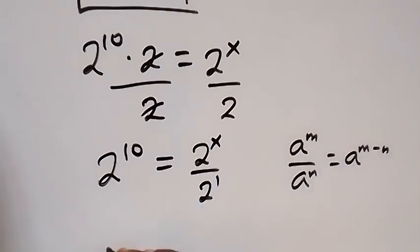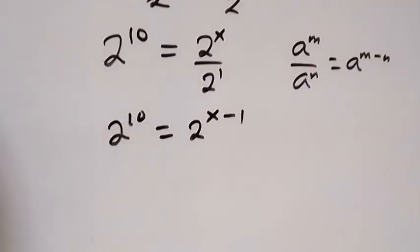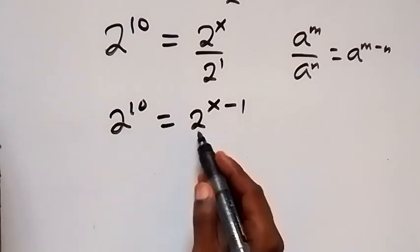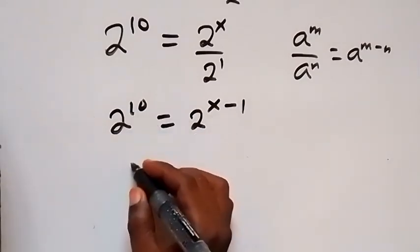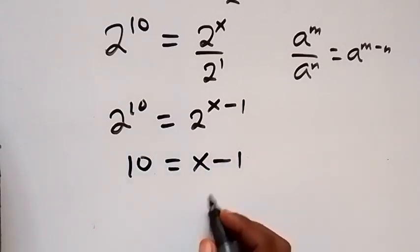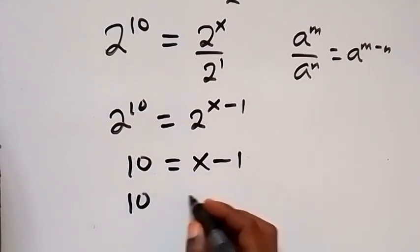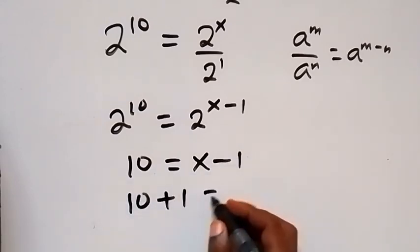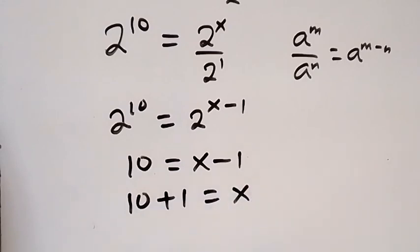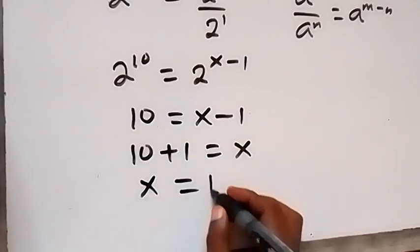From the law of indices, a raised to power m divided by a raised to power n with the same base gives us a raised to power m minus n. So we equate the powers: 10 equals x minus 1. Solving for x, we take minus 1 to the other side, so 10 plus 1 equals x. Therefore x equals 10 plus 1, which is 11.